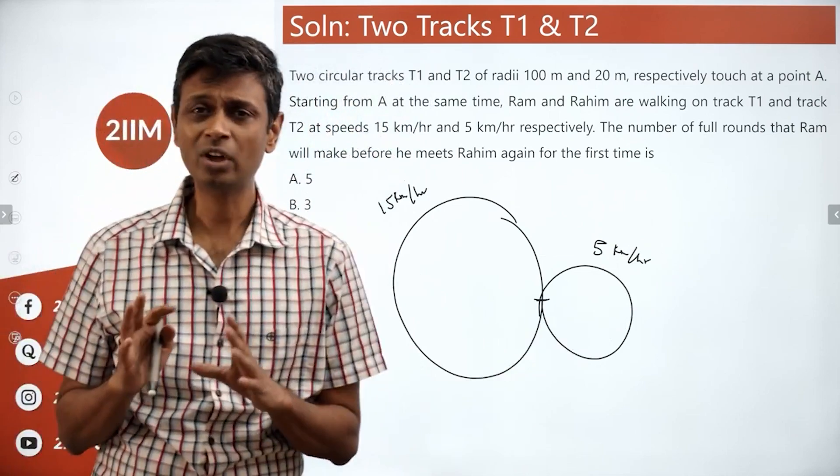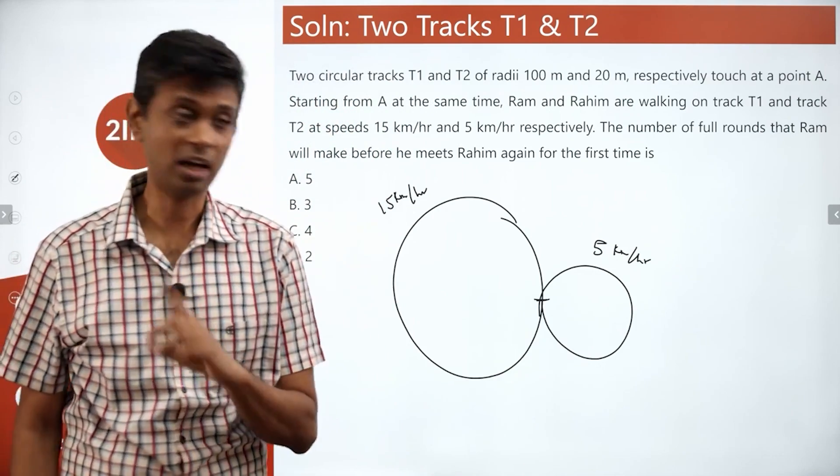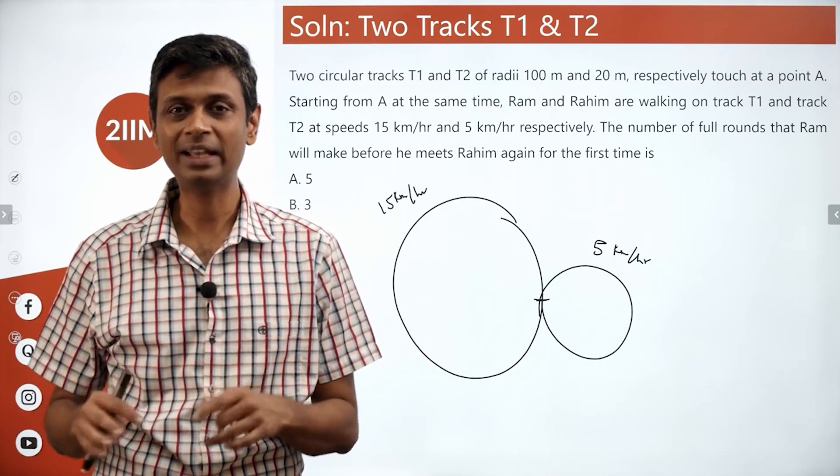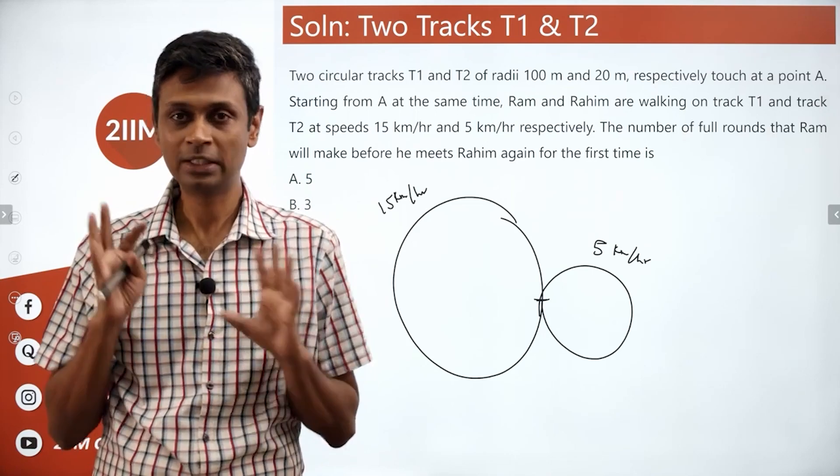Key thing here, we've got to calculate the time taken by Ram to complete a lap, time taken by Rahim to complete a lap, and then we'll have to find the LCM of those two times. That's the idea.